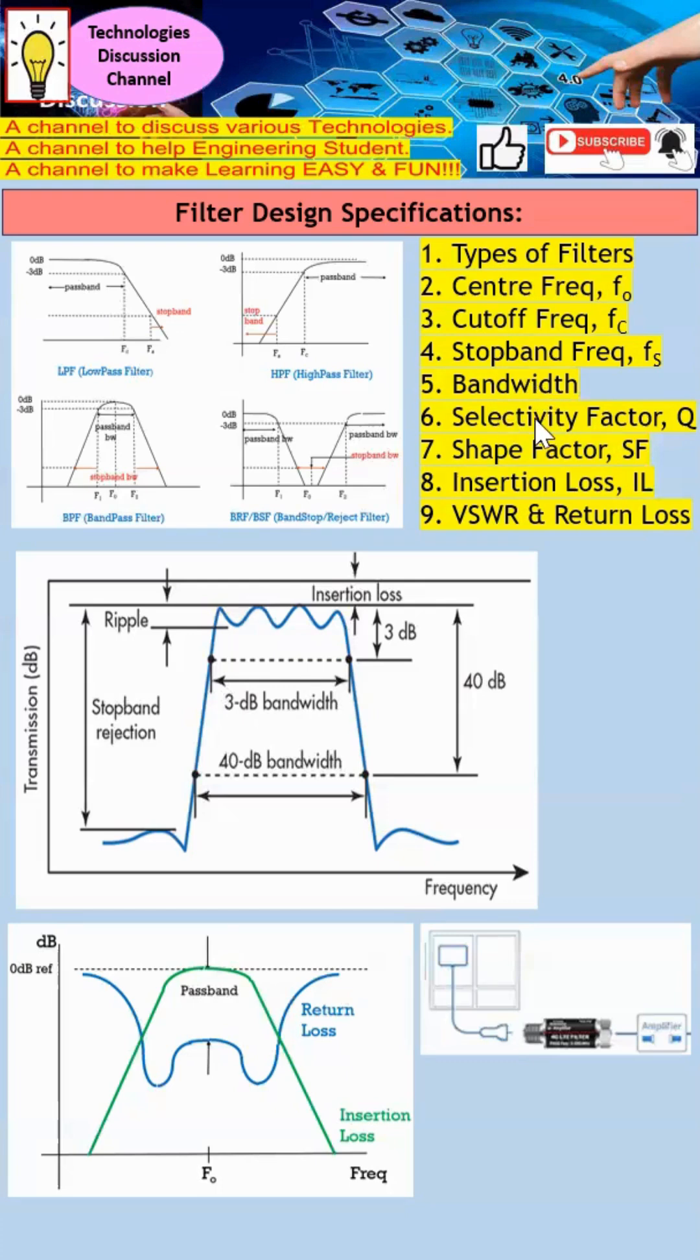Next, the selectivity factor Q. Selectivity factor Q has an inverse relationship with bandwidth. For example, low bandwidth will be high Q. High bandwidth gives a low Q.